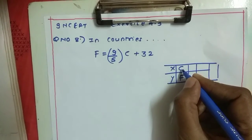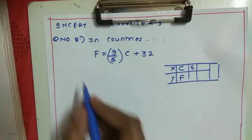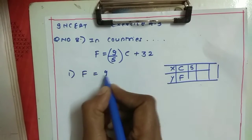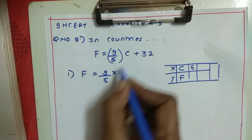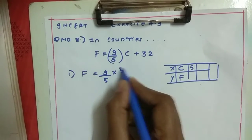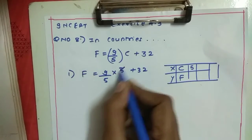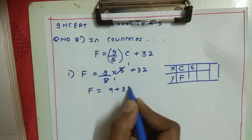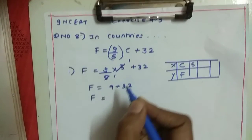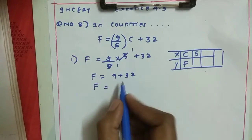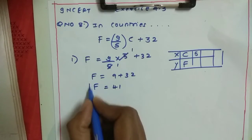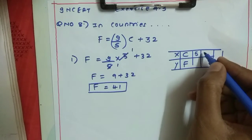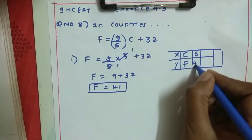When Celsius is 5: F = 9/5 × 5 + 32. Here 5 divided by 5 is 1, so F = 9 × 1 + 32 = 9 + 32 = 41. So F is 41 Fahrenheit. When the temperature is 5 degrees Celsius, in Fahrenheit it will be measured as 41.